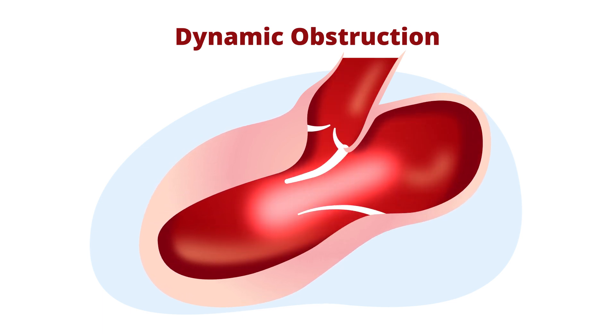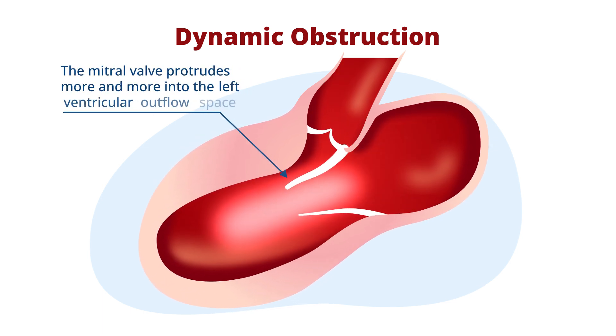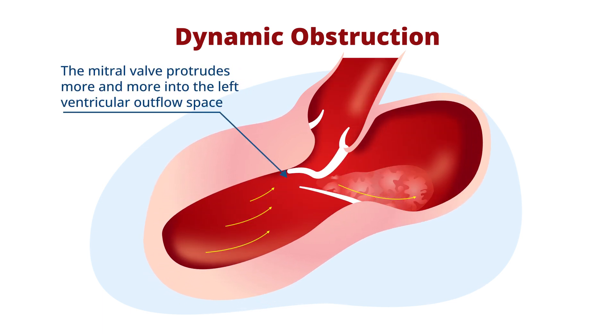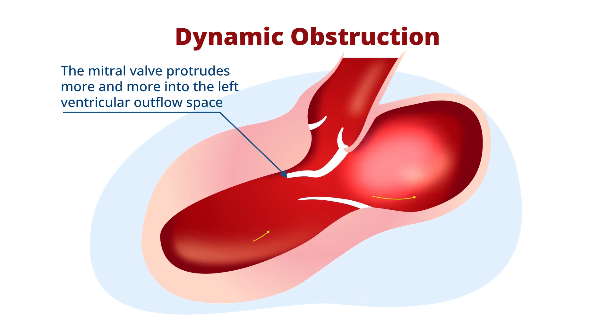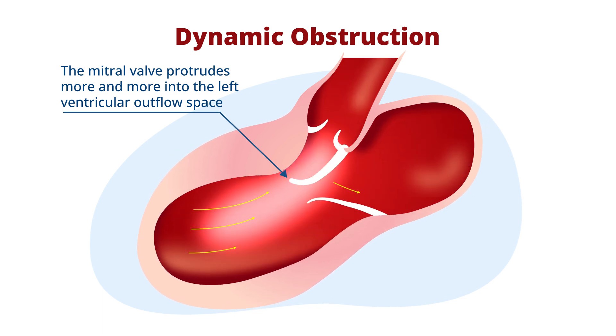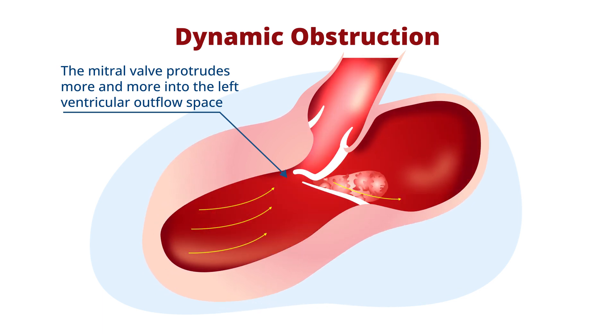In this case, as systole progresses, the mitral valve protrudes more and more into the left ventricular outflow space, which causes an obstruction in mid to late systole.